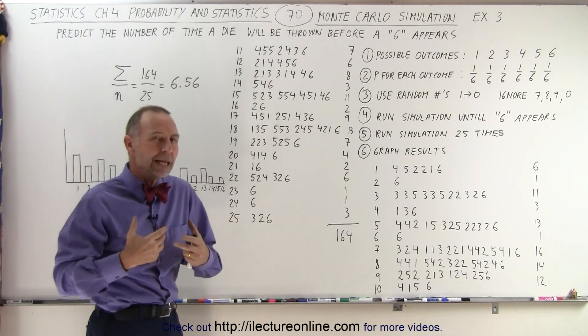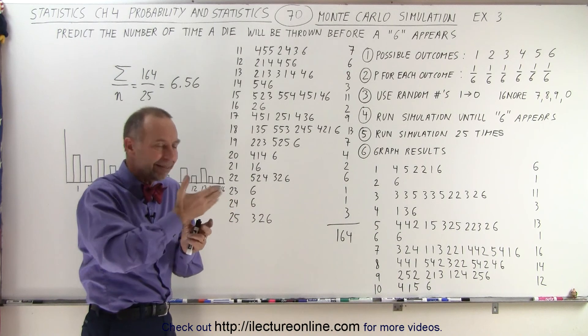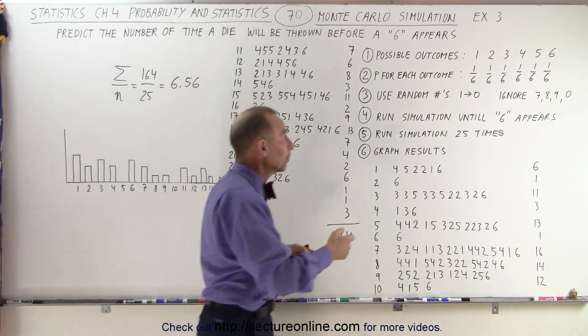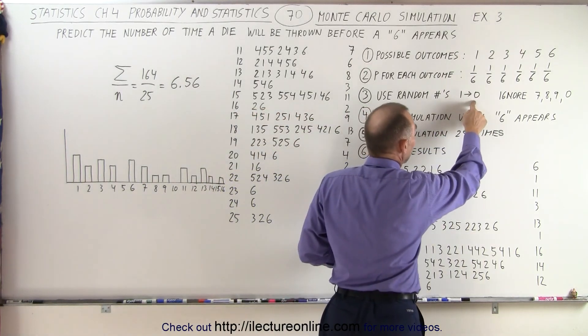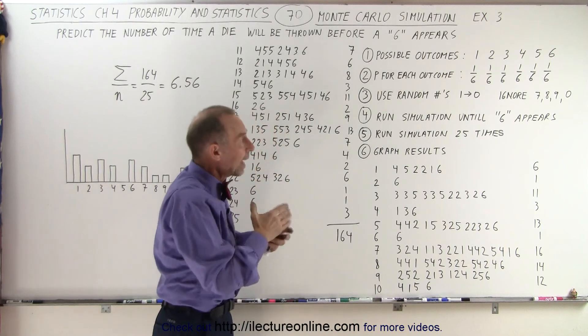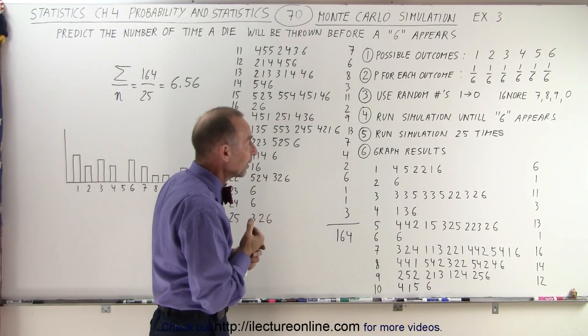Then you have to come up with a means to generate a random number that simulates what the outcomes could be. So you can take a random generator that produces a number from zero to nine, and if you ignore seven, eight, nine, and zero, then you only count it if you have a one through six, and there's a one-to-one correspondence.